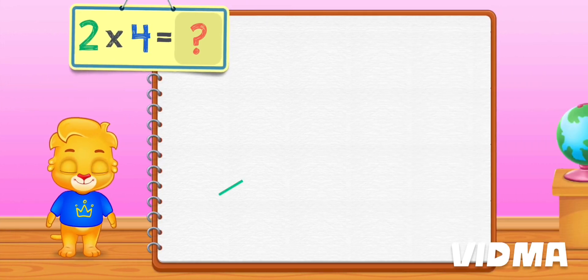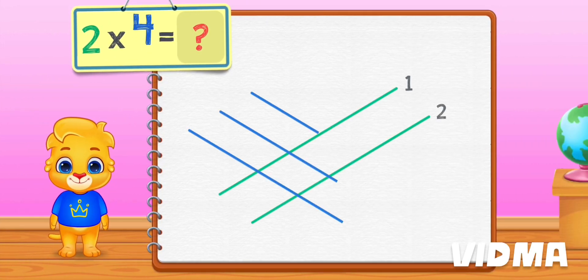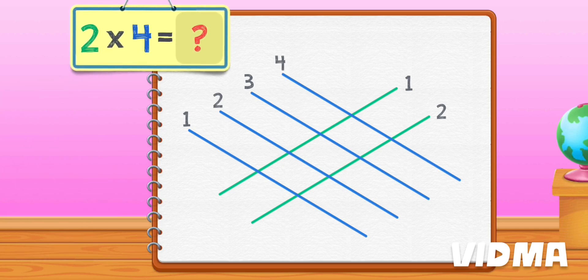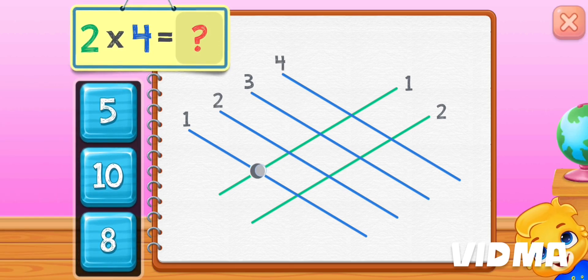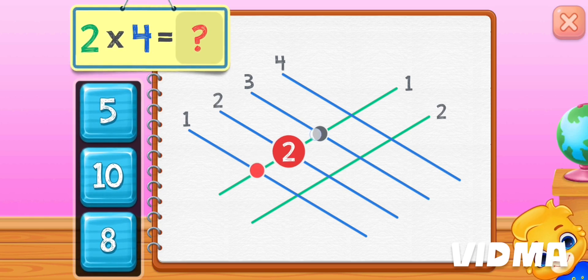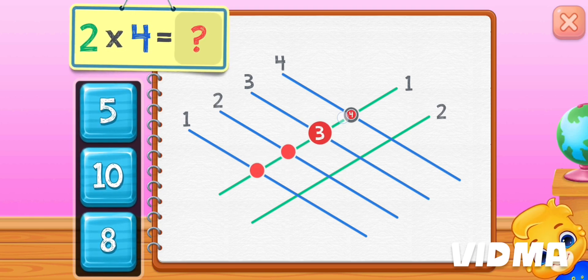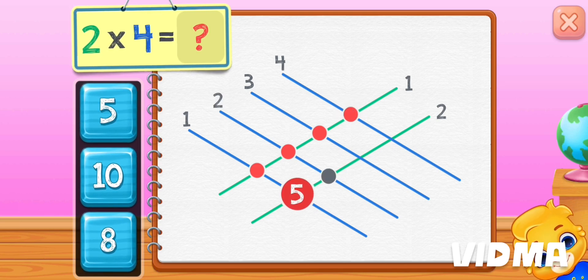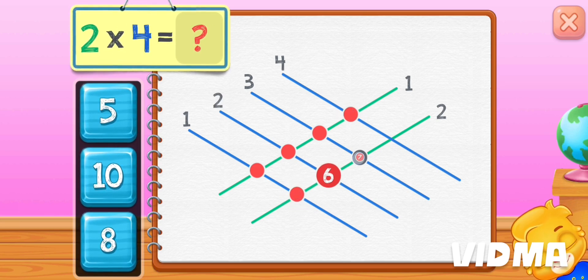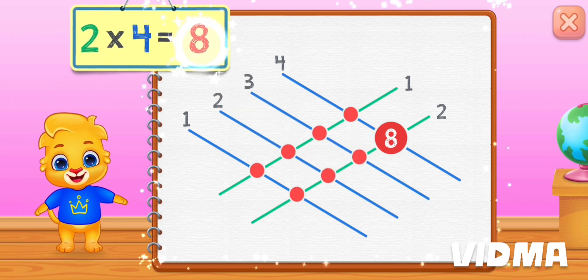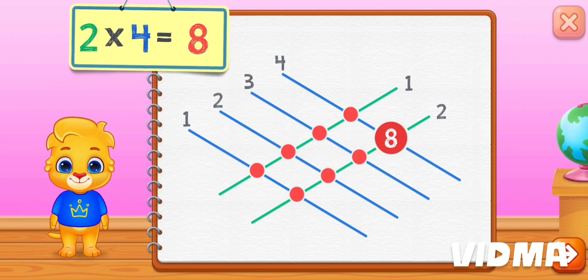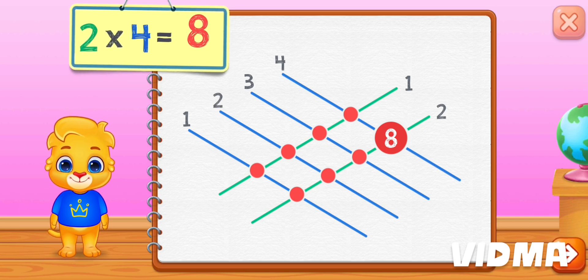Two times four equals — one, two, three, four, five, six, seven, eight. Two times four equals eight.